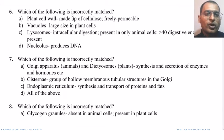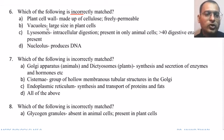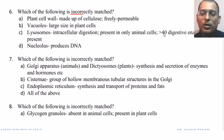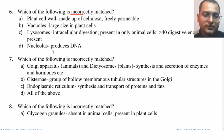Next question: which of the following is incorrect? Plant cell wall — made up of cellulose, freely permeable; vacuoles — large size in plant cells; lysosomes — intracellular digestion, present in only animal cells, more than 40 digestive enzymes are present; nucleolus — produces DNA.